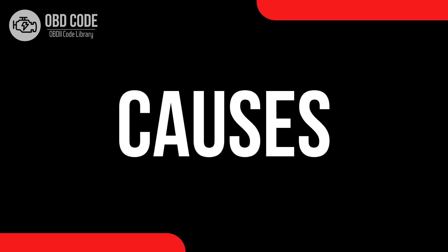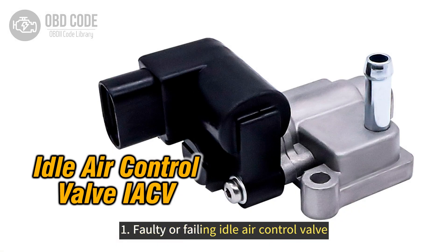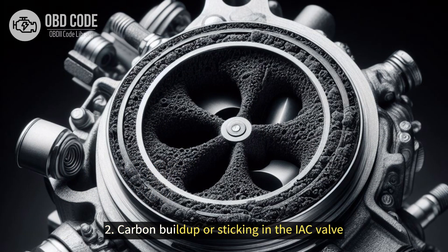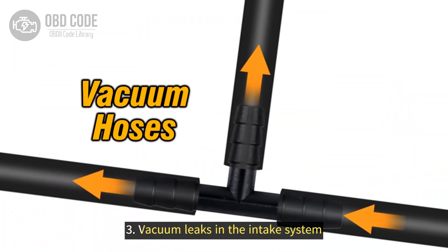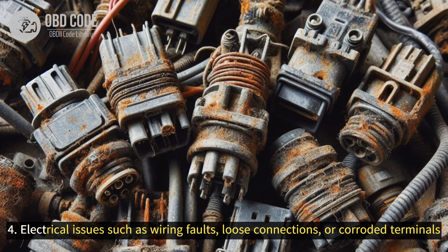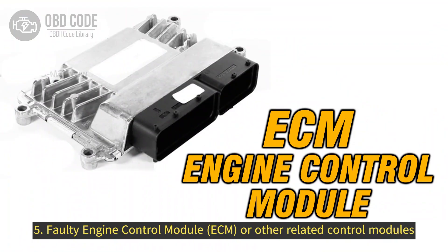Causes of code P0519: 1. Faulty or failing idle air control valve. 2. Carbon buildup or sticking in the IAC valve. 3. Vacuum leaks in the intake system. 4. Electrical issues such as wiring faults, loose connections, or corroded terminals. 5. Faulty engine control module ECM or other related control modules.